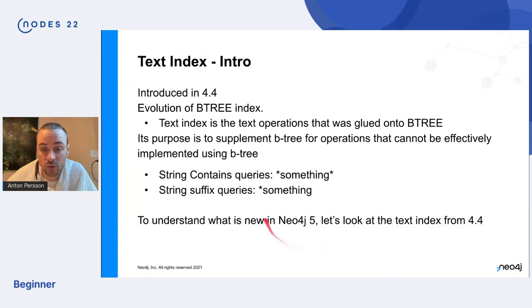So the text index type was introduced in Neo4j 4 and it's basically an evolution on the Btree type. Basically we're taking the text index parts that was glued onto the Btree and broken it out into a separate thing. And the purpose of it is to supplement the Btree for operations that cannot be effectively done on the Btree, such as, or specifically contains and suffix queries. So we see here, like a wildcard star and then something and a wildcard or just with a leading one.